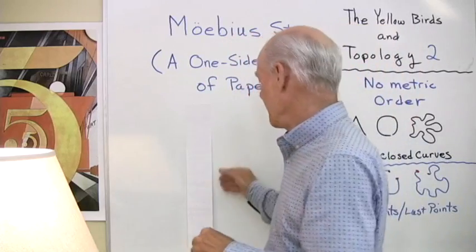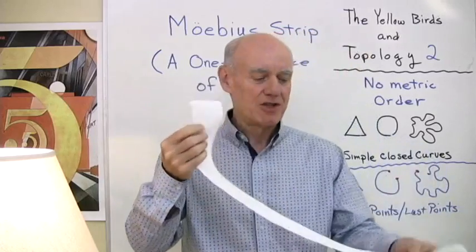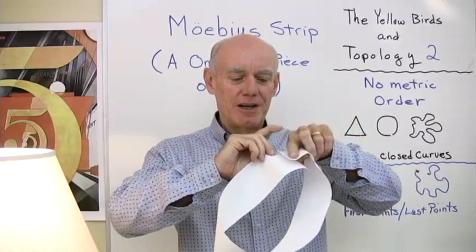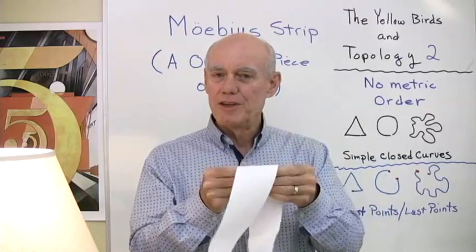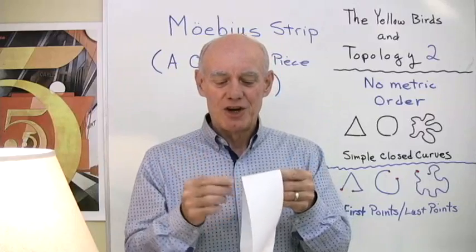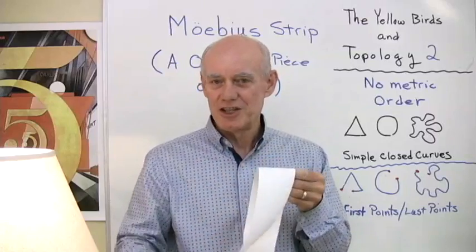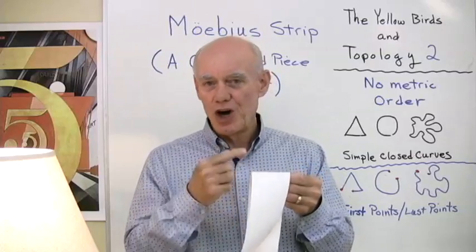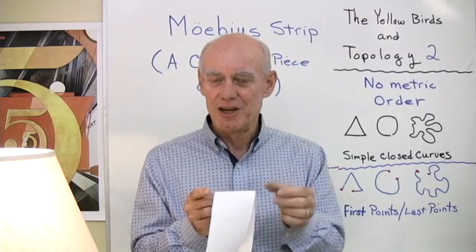Now what I want to do is take another strip of paper and this time, instead of just connecting the edges like this, I'm going to put a half turn in it and connect the edges like this. And what I end up with is a one-sided piece of paper that has only one edge. So this side right here and this side right here are exactly the same side. From this point to this point is just further along that side. And this edge and this edge are exactly the same thing.